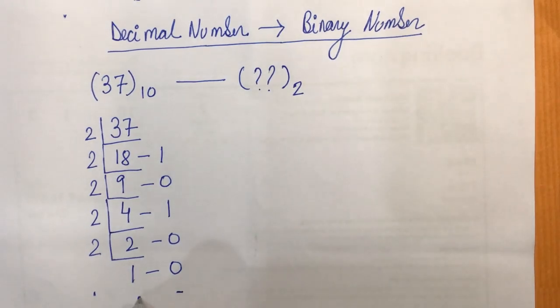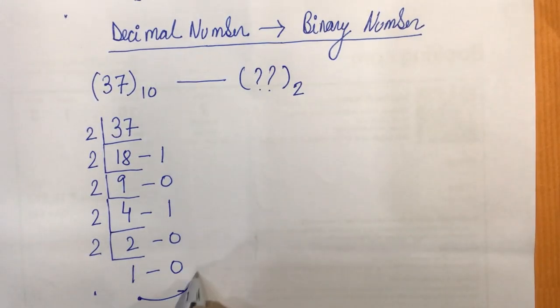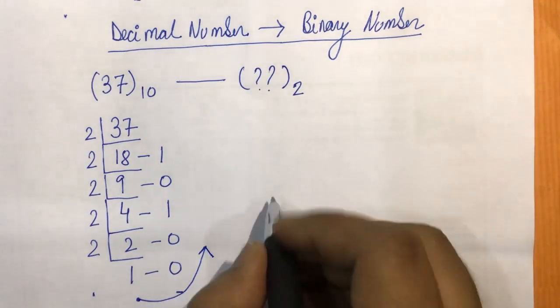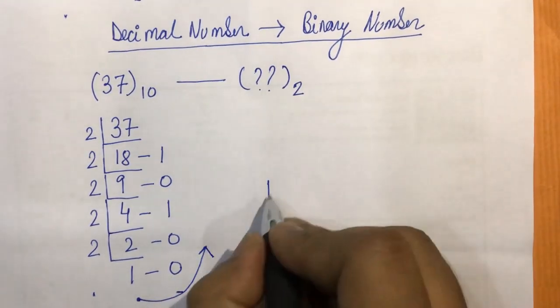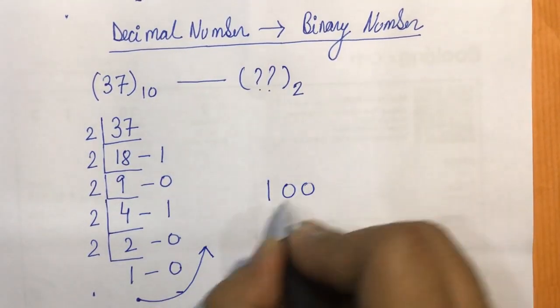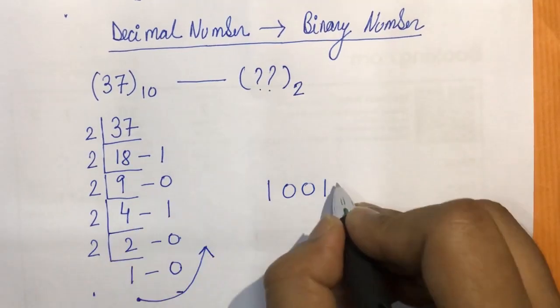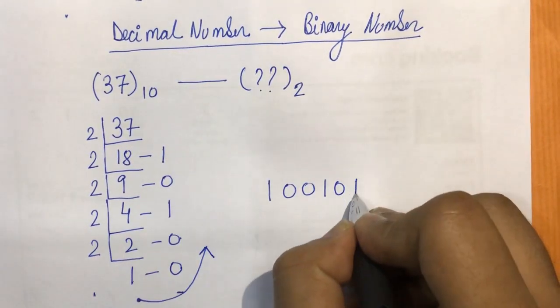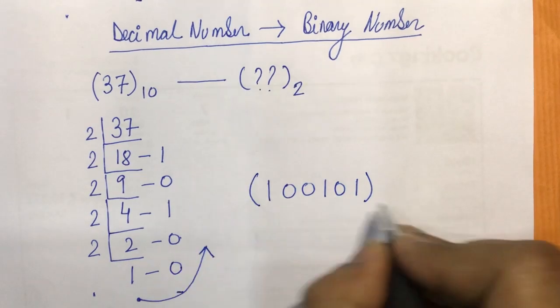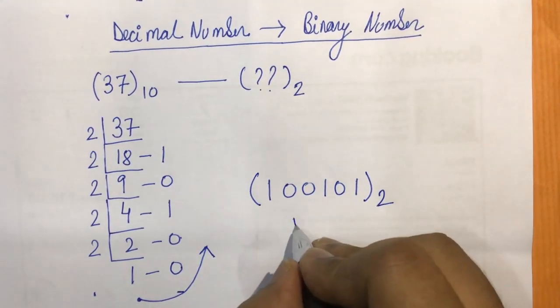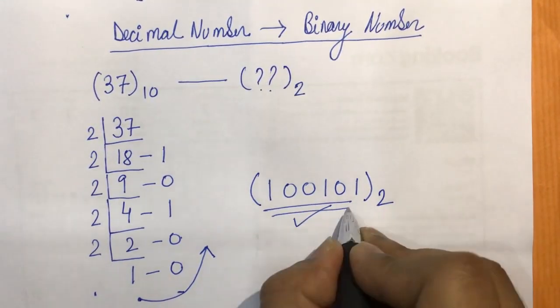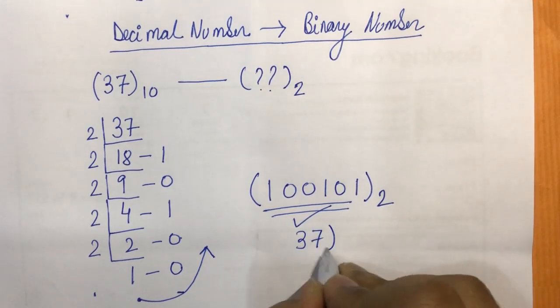Now how do we write the thing? We write it from the reverse order. So we'll take 1 first, then 0, then this 0, then this 1, then this 0, and then this 1. So the base was 2, so we'll write 2. This is binary equivalent of this decimal number.